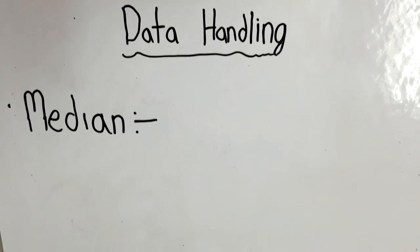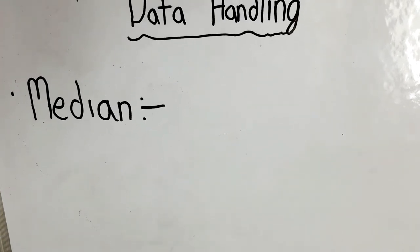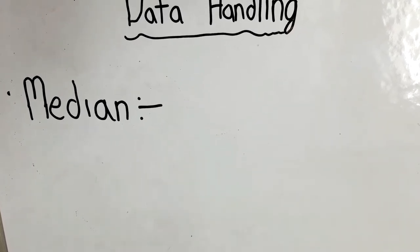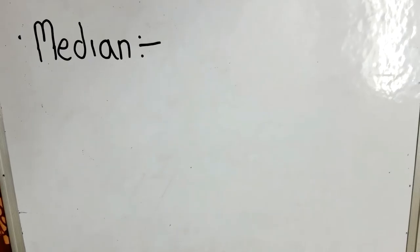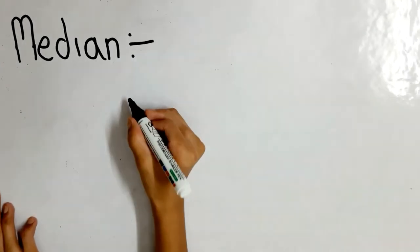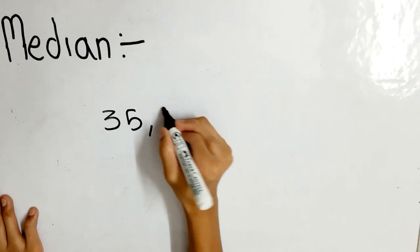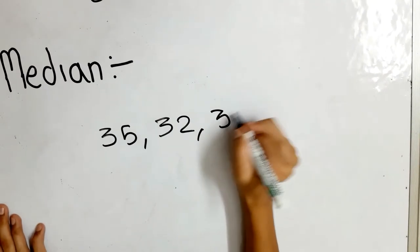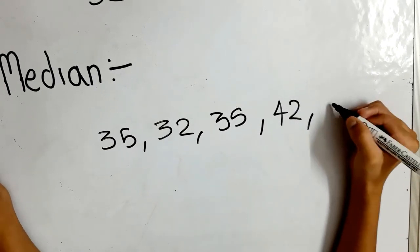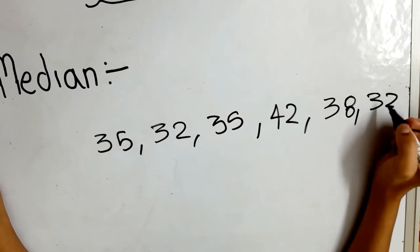To find out the median, first you have to arrange the given numbers in ascending or descending order. Then you have to find the middle observation or the middle number. Let's take an example: 35, 32, 35, 42, 38, 32, 34.